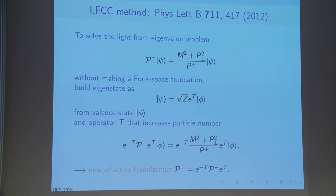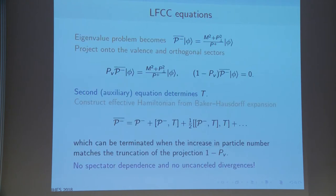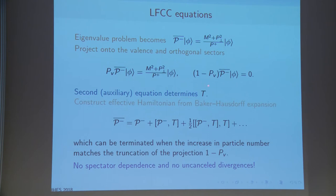If we multiply both parts of the eigenvalue problem by e^{-T}, we obtain the Baker-Hausdorff expression of the light front Hamiltonian on the left-hand side applied to the valence state, and on the right-hand side we have this expression with the eigenstate ψ. The eigenvalue becomes the effective light front Hamiltonian applied to the valence state. We then do projections: project on the valence state and also project orthogonal to the valence state. These auxiliary equations determine operator T and the functions in T, which represent distributions of momentum.